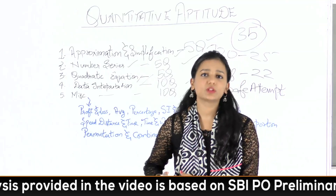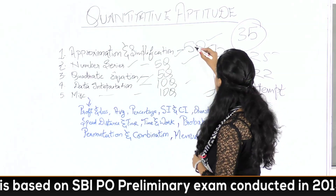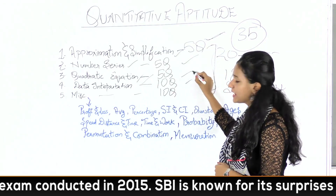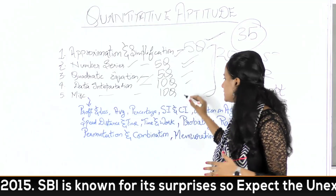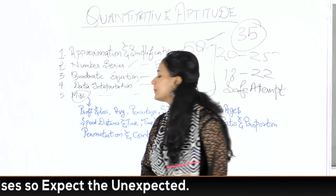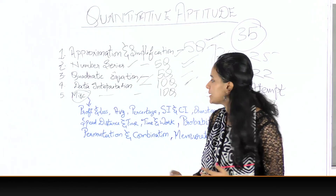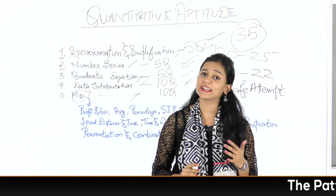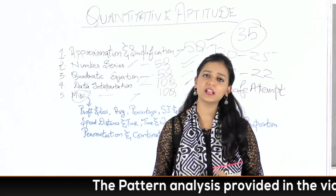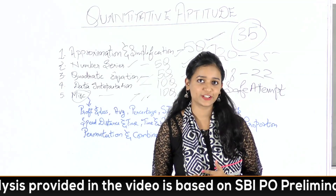If your calculation is good, I suggest attempting Approximation and Simplification first, then Quadratic Equation, then Number Series, and then DI. The tricky part is the Language Problems or Miscellaneous section. Sometimes questions can be really tricky, and if you attempt this section first you can get lost in it. So if you find this section difficult, keep it for last so that you don't get stuck.